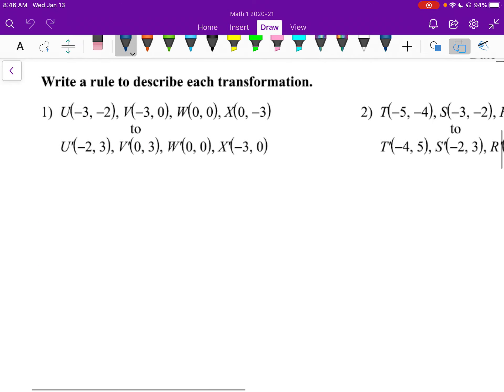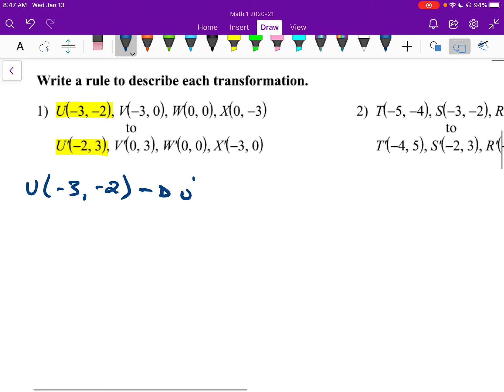All right, number one. We're writing the rule to describe the transformation. Just like before, we really don't care about all the points. We care about one of the points. So let's look at one of the points, maybe u and u prime. So u goes from negative 3, negative 2, to u prime being negative 2, 3.